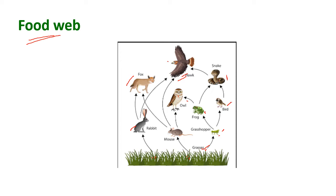How are they interrelated? The rabbit is eaten by fox, and also at the same time the rabbit is eaten by the vulture.